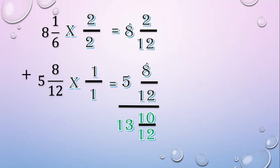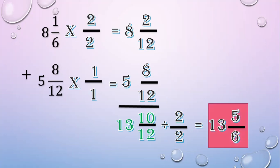Then express the answer in lowest terms. Divide by the greatest common factor: 2 over 2. Then 10 divided by 2 equals 5; 12 divided by 2 equals 6. The final answer is 13 and 5 over 6.